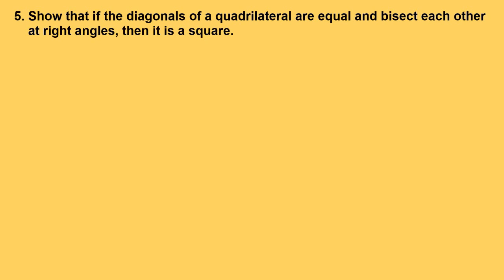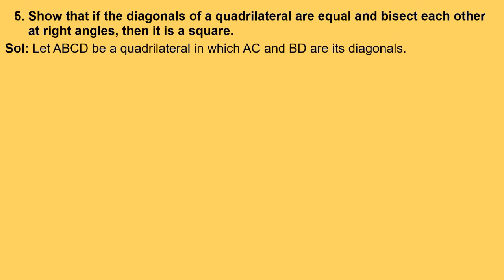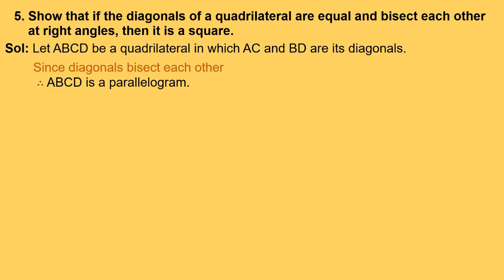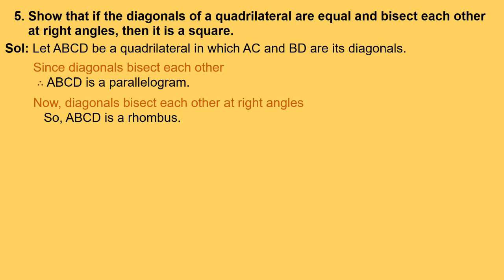The solution: let ABCD be a quadrilateral in which AC and BD are its diagonals. We know that diagonals bisect each other in a parallelogram. Since in the given case diagonals bisect each other, therefore ABCD is a parallelogram. Now, it is also given that diagonals bisect each other at right angles. So ABCD is a rhombus. But it is given that diagonals are equal here, and diagonals are not equal in the case of a rhombus. This implies ABCD is a square. So in a quadrilateral, if diagonals are equal and bisect each other at right angles, then it is a square.